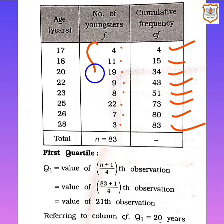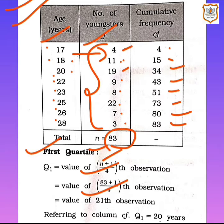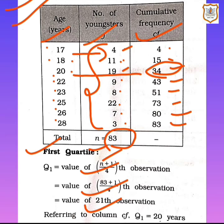The total frequency n is 83. For Q1 in discrete data, the formula is (n+1)/4, so (83+1)/4 = 21st observation. In the cumulative frequency column, the 21st observation lies in 34, and in front of that the variable is 20. So Q1 = 20.